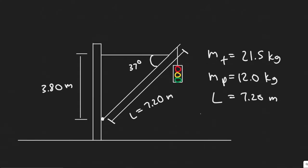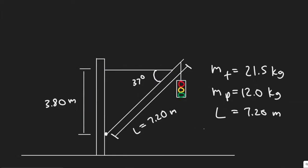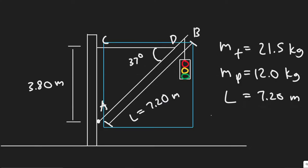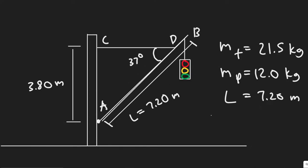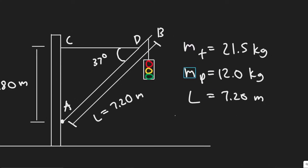We basically have this traffic light hanging from this pole. Imagine this line is our pole, and we also have this cable with some tension holding it to the wall. We're given a lot of information. Let me label these points: we have point A, point B, point D, and point C. We're given the length of this bar, which is 7.2 meters, the distance from our pivot point A to the cable, which is 3.8 meters, and the mass of our traffic light and the mass of the pole.